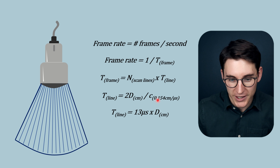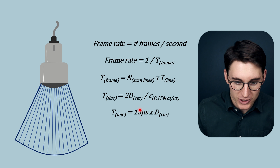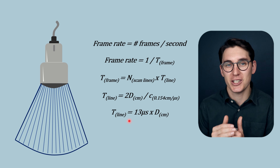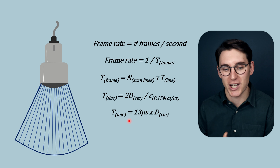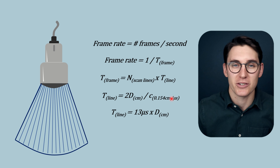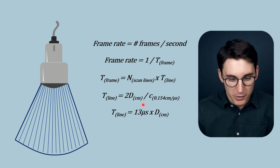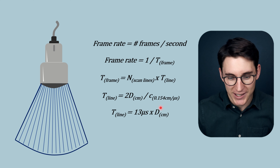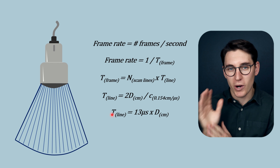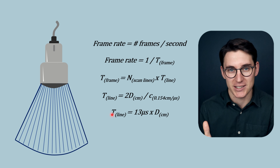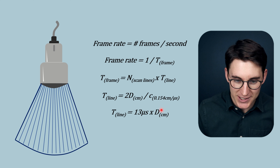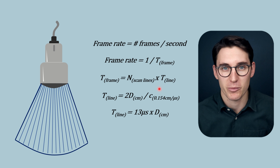Two divided by 0.154 gives us 13 microseconds. This formula is specific to soft tissue — if imaging another tissue type, this formula would not apply. From this equation, we can see that increasing our depth increases the time it takes to acquire a single A-line of data for the entire field of view, and that changing the depth will ultimately affect our frame rate.